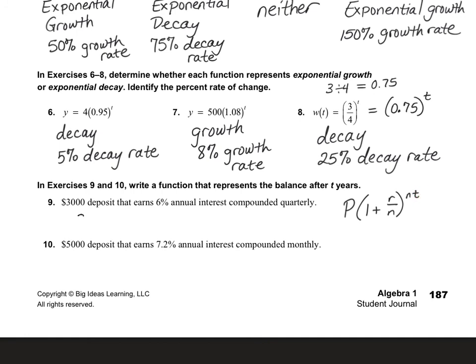So on number nine, we have 3,000 for the principal. And then we have 1 plus my rate is 6%. Now I need to change that to a decimal. So I moved my decimal place over, so it's 0.06 over how many times per year it's compounded. Quarterly means four times per year. So I'm going to put a 4 here, and then I do to the power of my quarterly again. So 4t. So that's the function of t equals that.